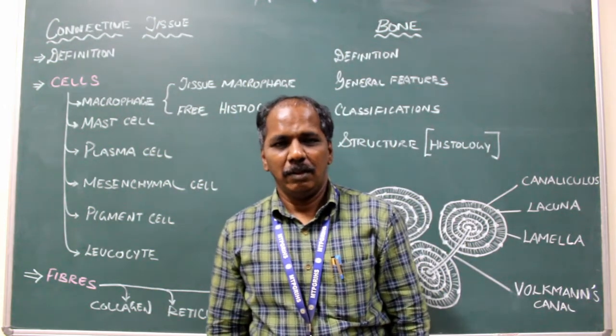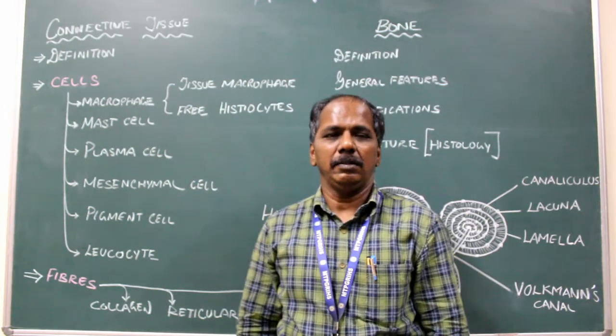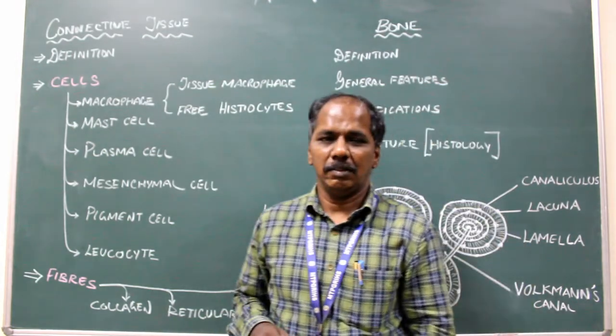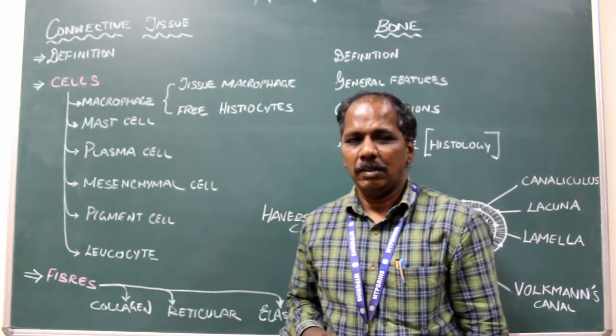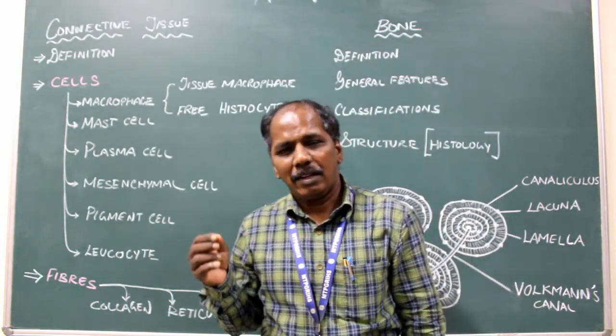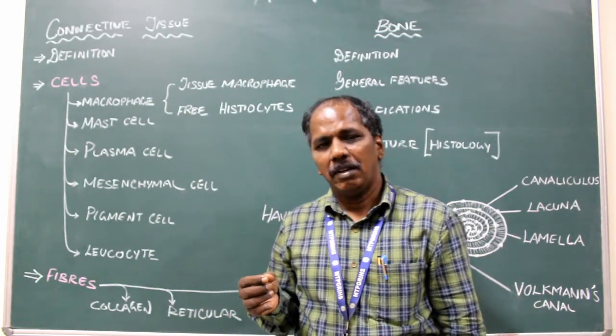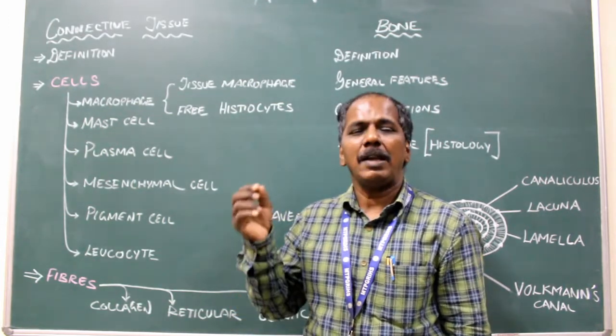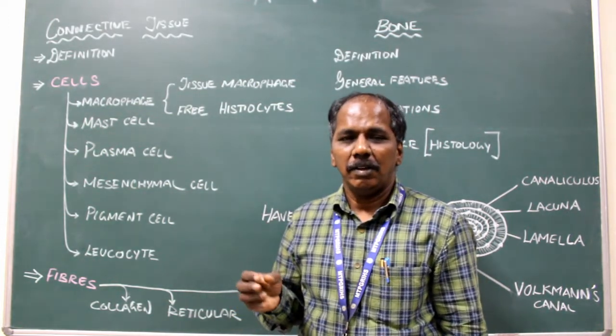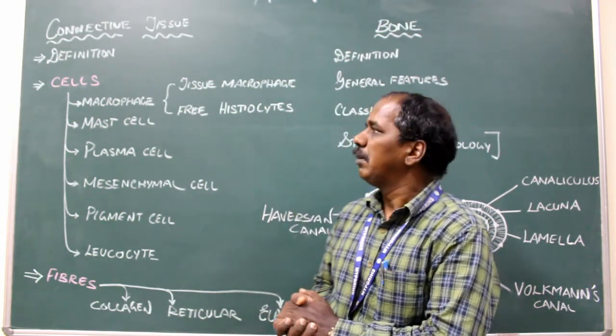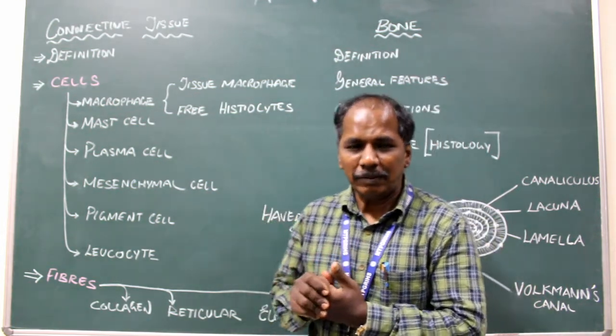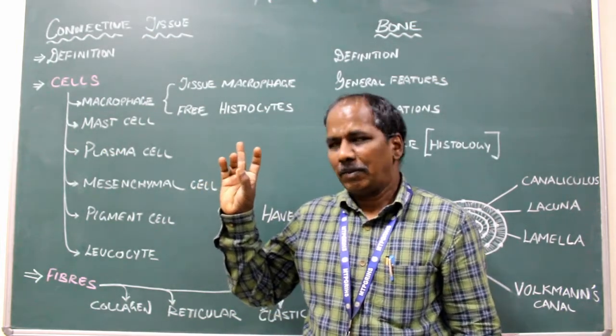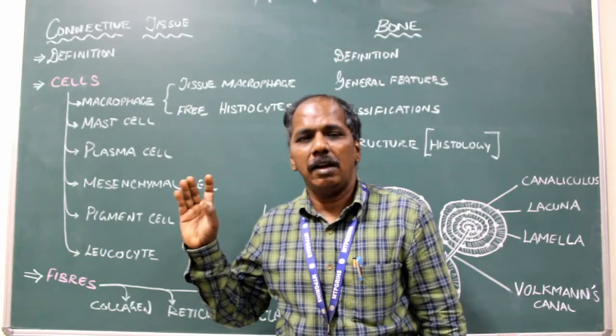Good morning. We are going to see today connective tissue. What is connective tissue? It consists of connective tissue cells embedded in a matrix of fibers and ground substance. So the connective tissue is made up of connective tissue cells, fibers of connective tissue, and the ground substance.